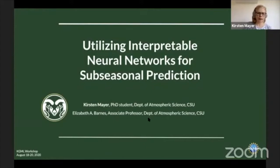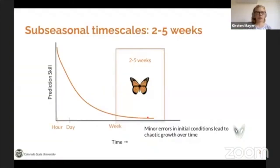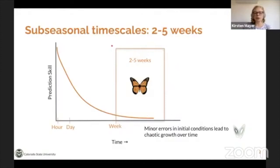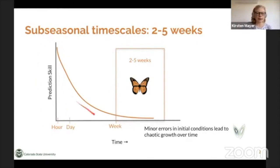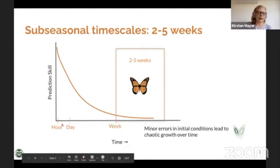First I'm going to talk about what subseasonal means. Subseasonal time scales are these two to five week time scales, so subseasonal prediction is prediction on these two to five weeks. Here I have a schematic of prediction scale on the y-axis and time on the x-axis where I have hour, day, and weeks marked.